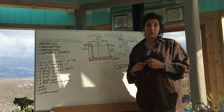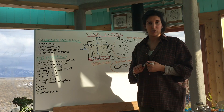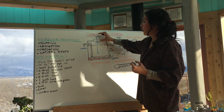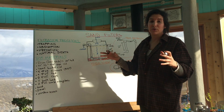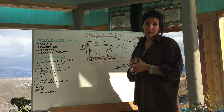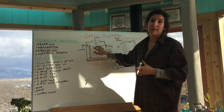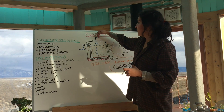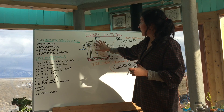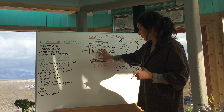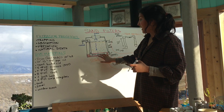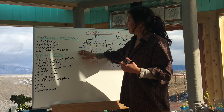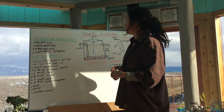Basically the way that the sand filter works is all gravitational. You have a big drum and on top of it you have a dispersing bucket that basically protects the bio layer. You input the water through that dispersing bucket, and then that water travels through the sand into some PVC piping and then outflows gravitationally.